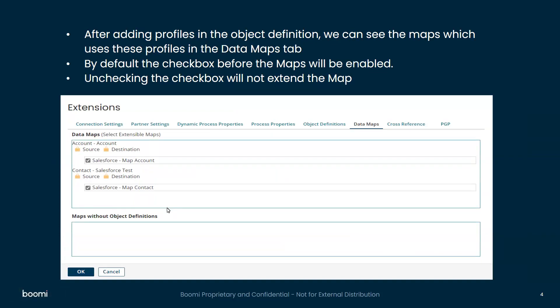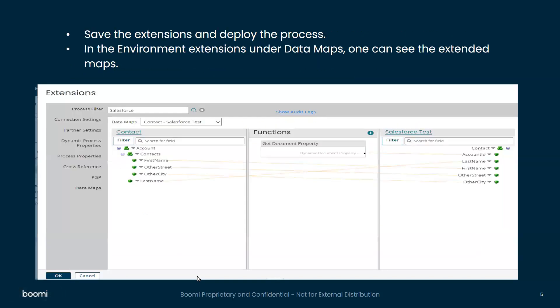Once you add the maps in the data maps, click OK and deploy the process to the environment. Now go to the environment extensions and open the Data Maps tab. Here we can see that particular map as an extended map in the environment extensions.